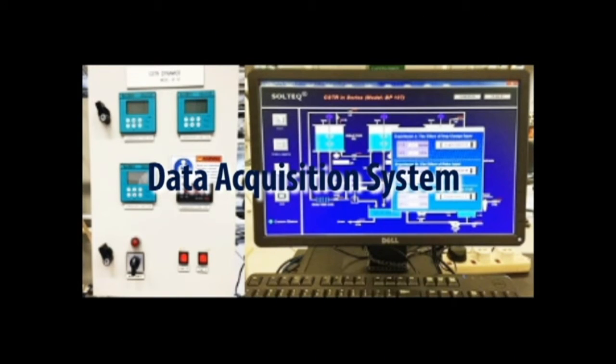The data acquisition system consists of a personal computer, ADC modules and instrumentations for measuring the process parameters. All analog signals from the sensors will be converted by the ADC modules into digital signals before being sent to the personal computer for display and manipulation.